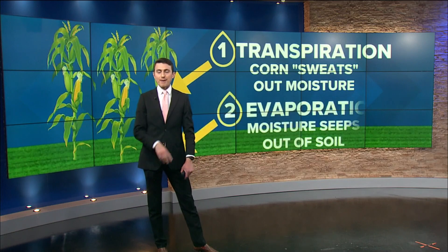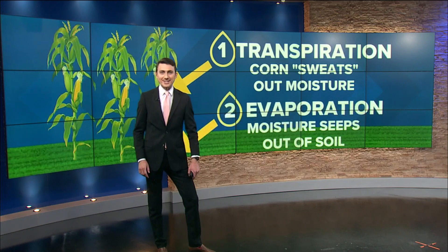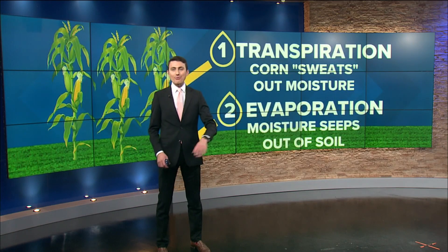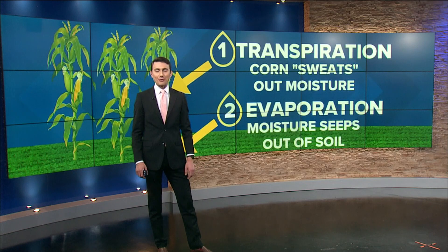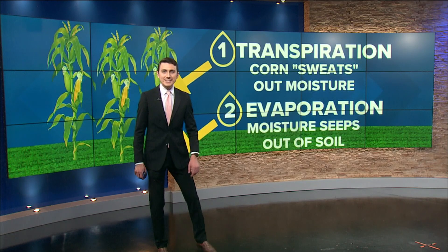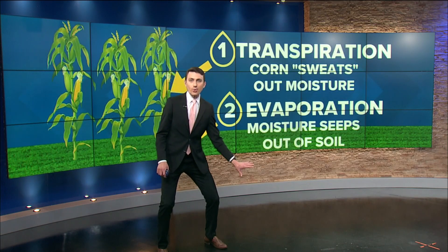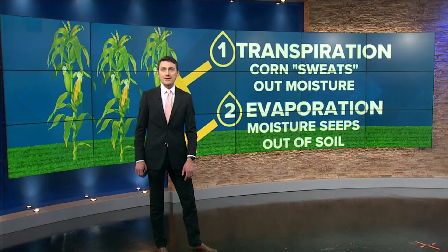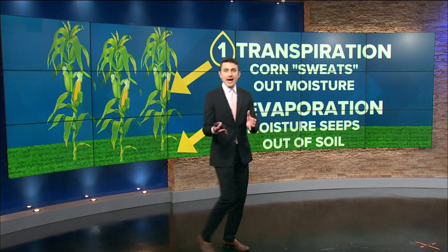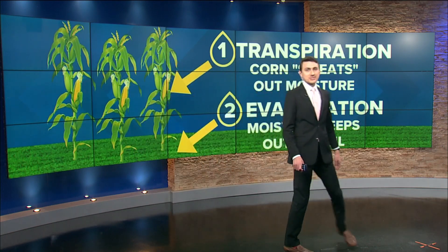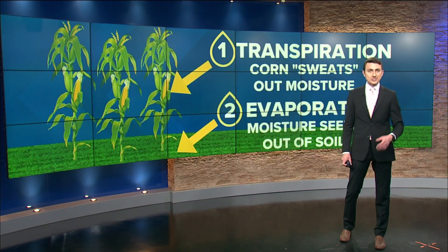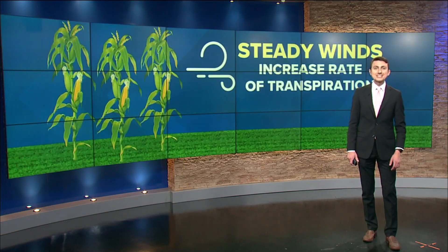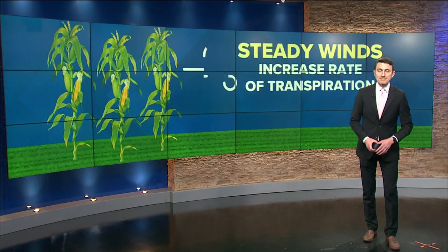The second part of evapotranspiration — and it's right in the name — is evaporation, which you may remember from learning about the water cycle back in school. This has more to do with the soil or the ground, as excess moisture seeps out and goes into the atmosphere. And this time of year, as we enter mid to late July, evapotranspiration is in full swing.